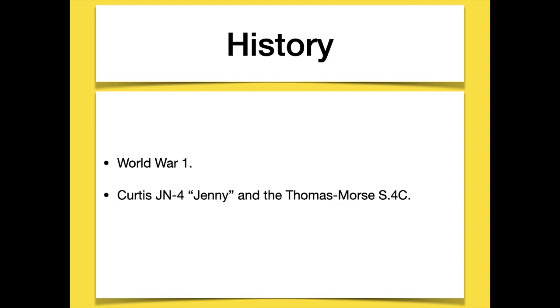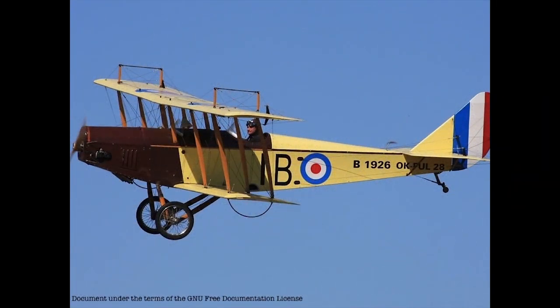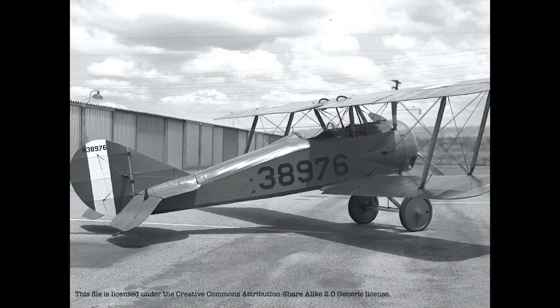Two well-known airplanes during the World War I era in the United States are the Curtiss JN-4, popularly known as Jenny, and the Thomas Morse S-4C known as the Morse Scout. Pilots had to learn to fly them by reference to pitch attitude, as force feel was unreliable. In flying the Jenny, there was a distinct tendency for pilots to over-control in pitch. The Morse was even more unstable, requiring a forward push on the stick in a turn and exhibiting a tendency for over-controlling with the rudder.